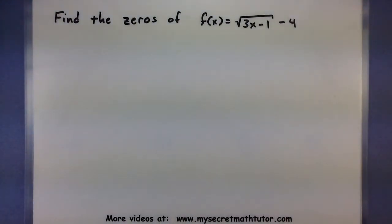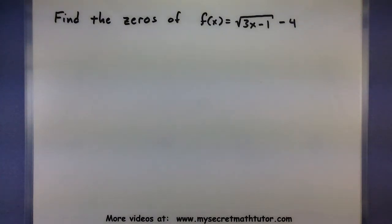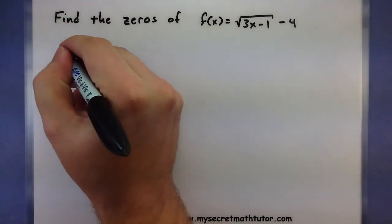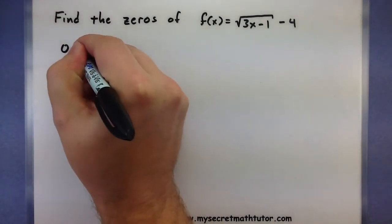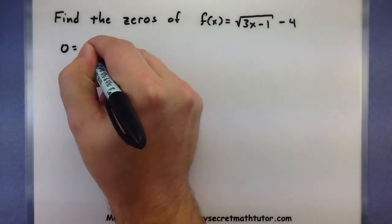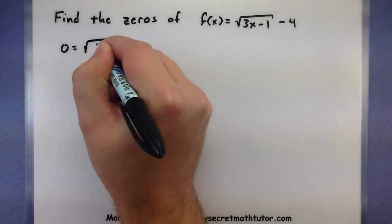In this first example, I want to find the zeros of the square root of 3x minus 1, minus 4. The way I want to think of this is: when does all of this equal zero?